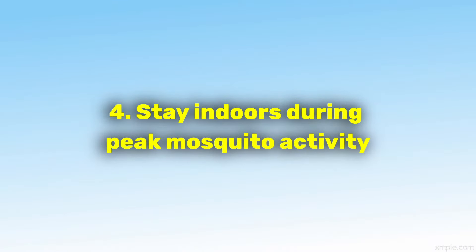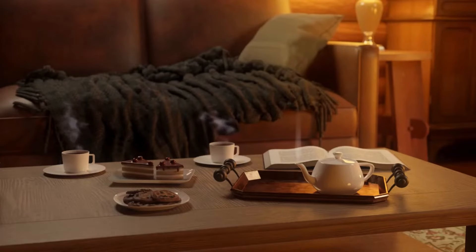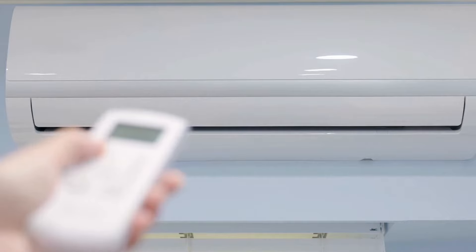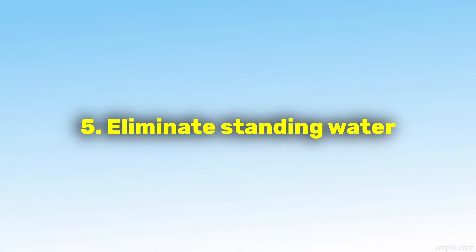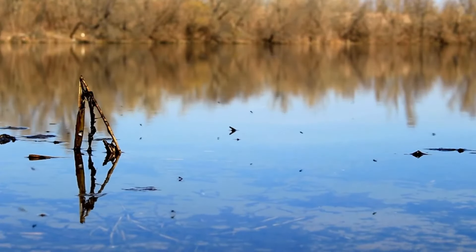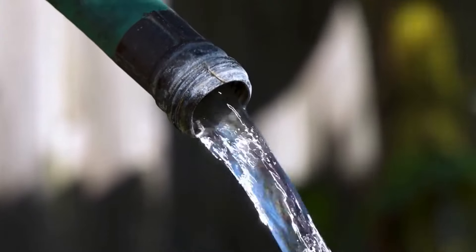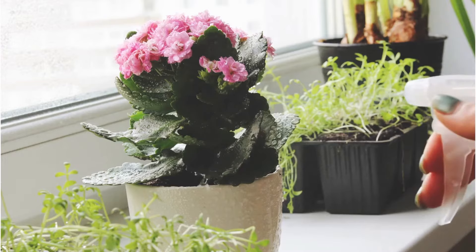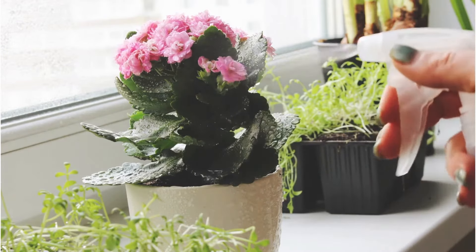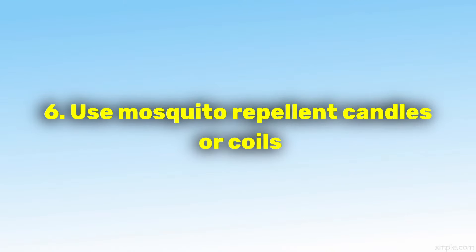Stay indoors during peak mosquito activity. Mosquitoes are most active during dawn and dusk, so try to stay indoors during these times if possible. Use air conditioning or screens on windows and doors to keep mosquitoes out. Eliminate standing water — mosquitoes breed in stagnant water, so regularly empty and clean containers that collect water around your home, such as flower pots, bird baths, and gutters. Cover or properly dispose of items that can hold water, such as tires and buckets.